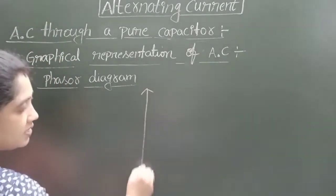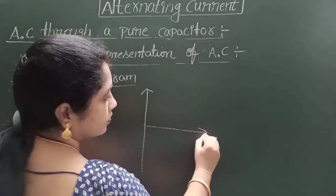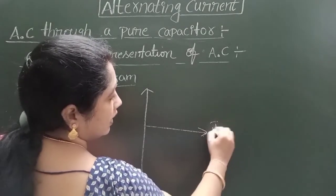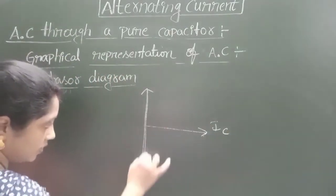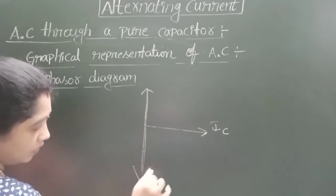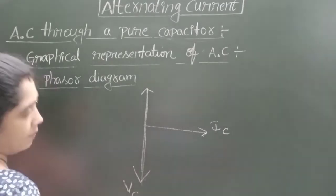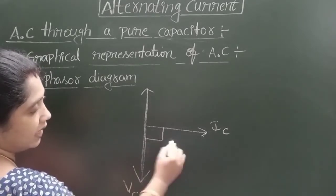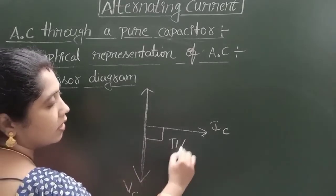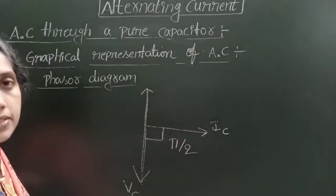In the phasor diagram, the current through the pure capacitor and the voltage across the capacitor are separated by an angle of 90°.